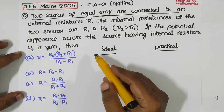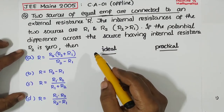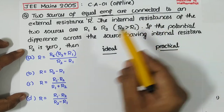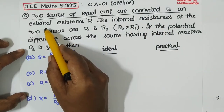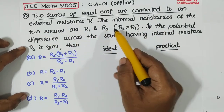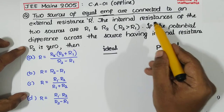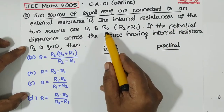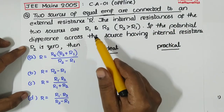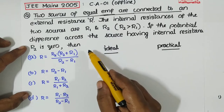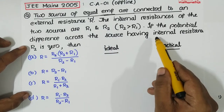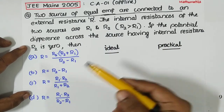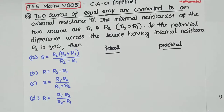This is a great question. Two sources of equal EMF are connected to an external resistance R. The internal resistances of the two sources are R1 and R2. If the potential difference across the source having resistance R2 is 0, then you have four options.